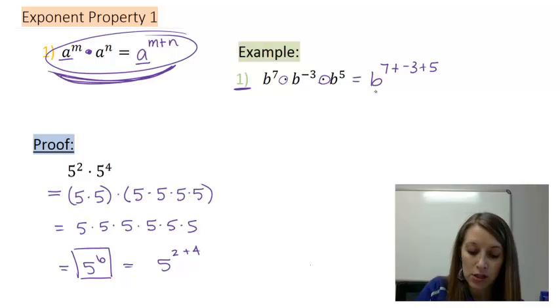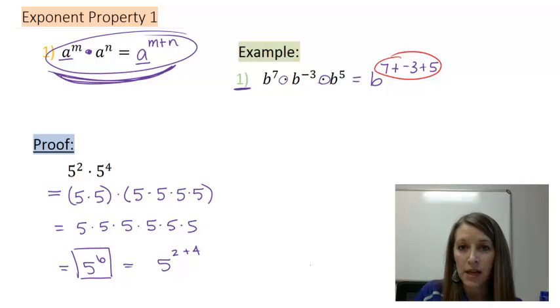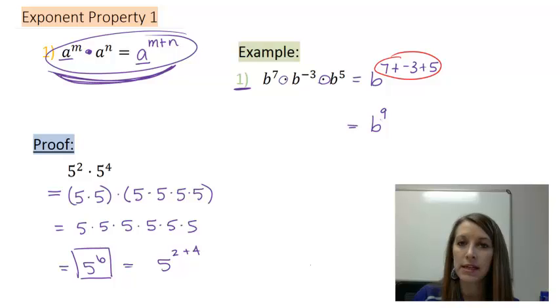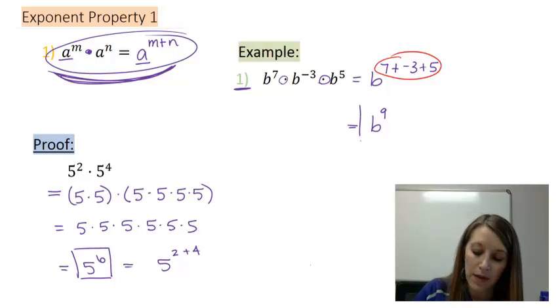So all I need to do here is the simple math. What is seven plus a negative three plus five? Or the way I think about this is seven minus three, four, four plus five is nine. So my correct answer to this is b to the ninth. And that is my final answer.